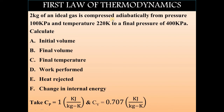Now we will see the important parameters given in the question. The initial pressure of the gas is 100 kPa, the initial temperature is 220 Kelvin, and the final pressure is 400 kPa. They have also given Cp and Cv: Cp is the specific heat at constant pressure = 1 kJ/kg·K, and Cv is the specific heat at constant volume = 0.707 kJ/kg·K.